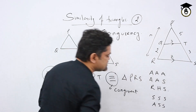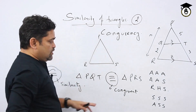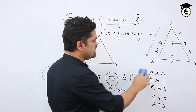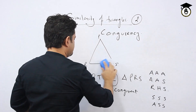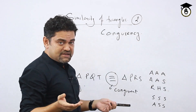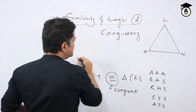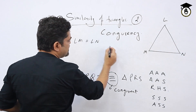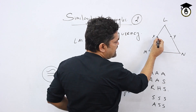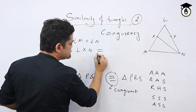Let me show you one problem on congruency, which is quite easy. We need to find the logic in two triangles — if the logic matches one of those conditions, we can say the two triangles are congruent. Consider an isosceles triangle LMN where LM equals LN. Points X and Y are on LM and LN respectively.